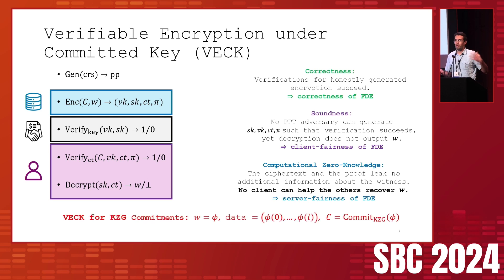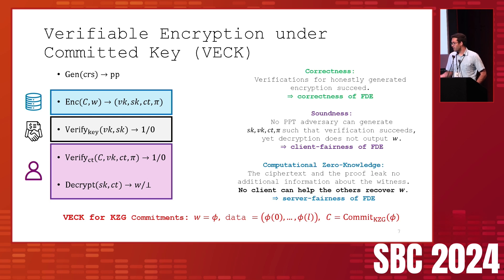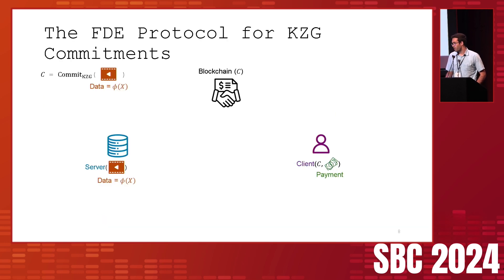Since one of our main motivations is proto-danksharding, we assume the commitment to the data is a KZG polynomial commitment. The witness is a polynomial, the data corresponds to evaluations of the polynomial at certain points, and the commitment is the KZG commitment.